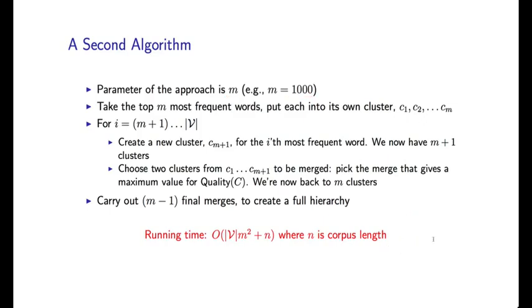So here's how it works. We initially take the top m most frequent words. For example, the top 1,000 most frequent words. And we put each of those words into their own cluster. So we might initially start off with, say, the, a, cat, dog, and so on. Listing the top 1,000 most frequent words in our corpus. And this is sort of the seed. This is the starting point of the algorithm.